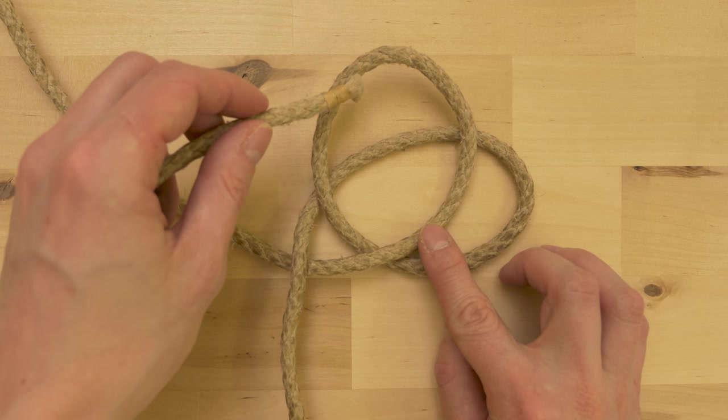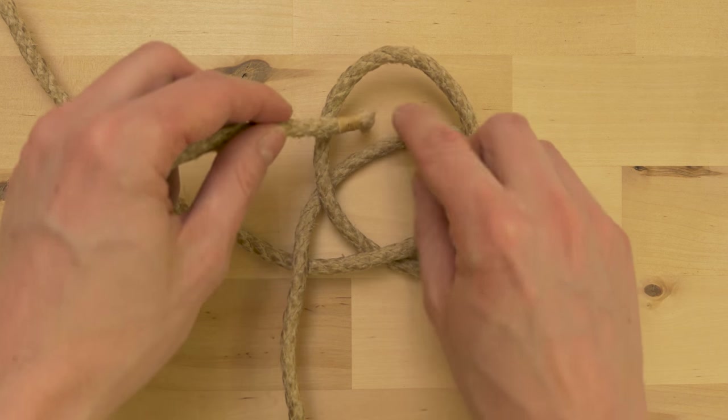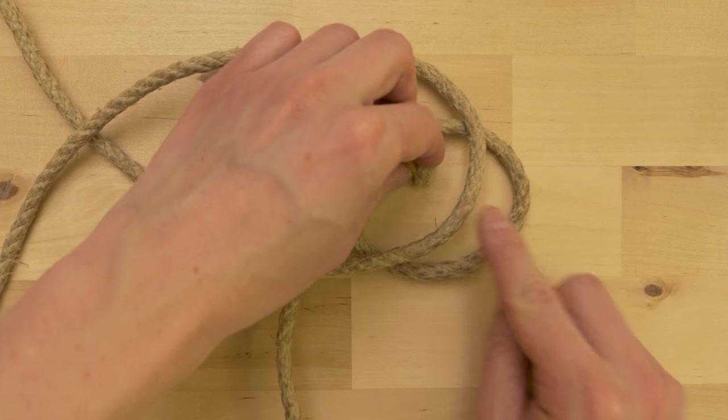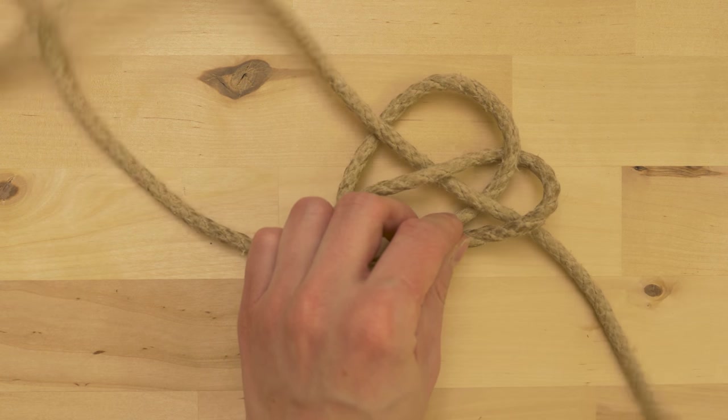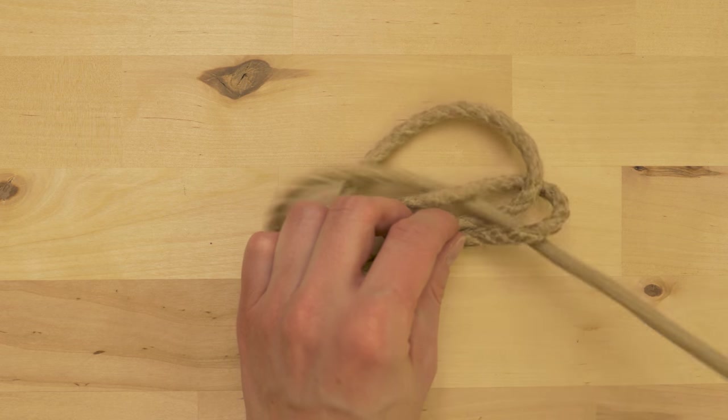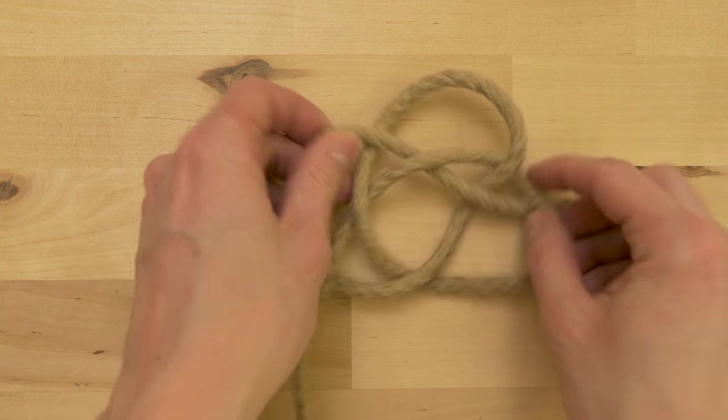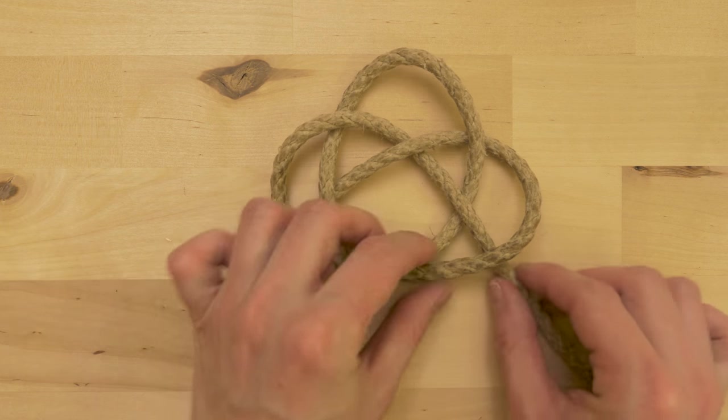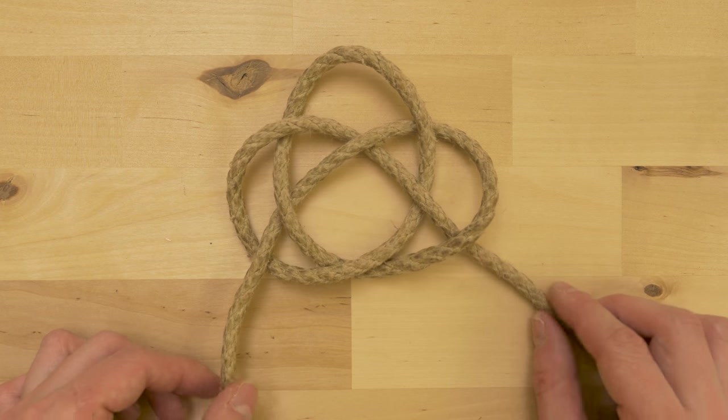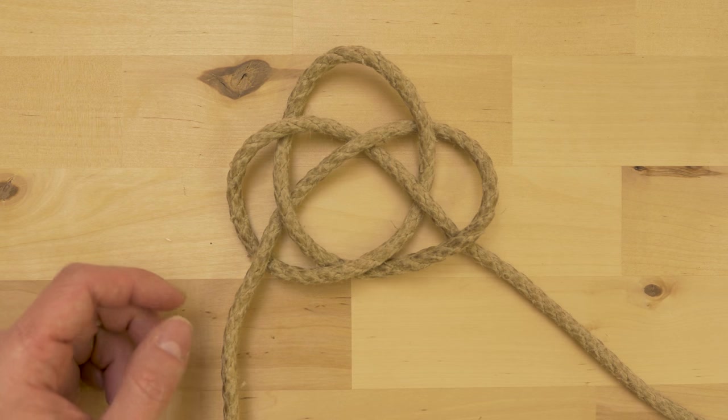So start with an over, then under, over and under. We now have a pretzel shape, also referred to as a pretzel knot.